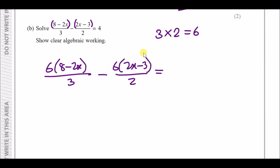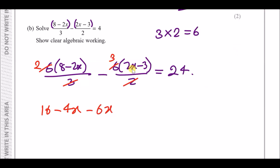Multiplying through by 6: 6 times (8 − 2x)/3 minus 6 times (2x − 3)/2 equals 4 times 6, which is 24. Simplifying: 6/3 cancels to 2, and 6/2 cancels to 3. So we have 2(8 − 2x) − 3(2x − 3) = 24. Expanding: 16 − 4x − 6x + 9 = 24.